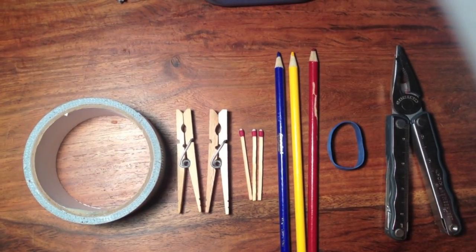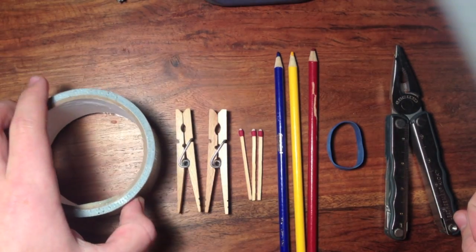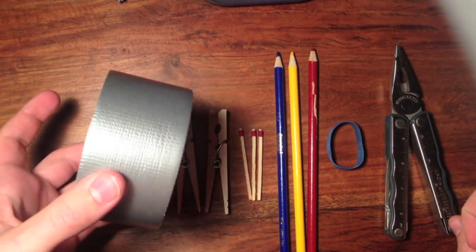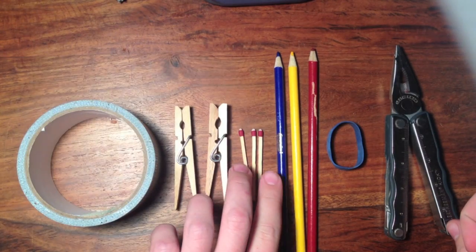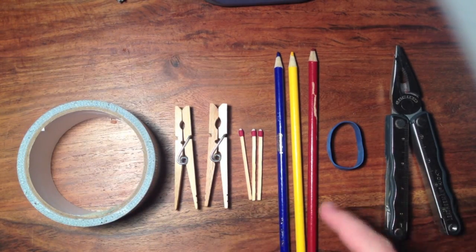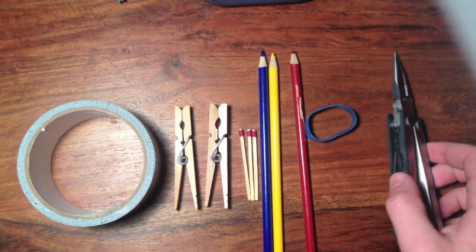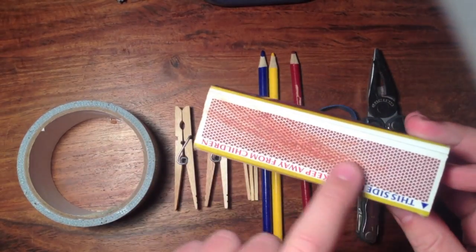This is a simple project, so you most likely have all the materials. What you're going to need is duct tape, two clothespins, a few matches, three pencils, a rubber band, a multi-tool, and a matchbox or striker.